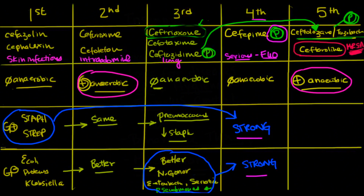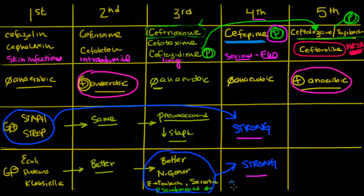One additional important point: sometimes when testing gram-negative bacteria for cefepime, you may notice it is sensitive to cefepime but not to any other cephalosporin. You should think about the possibility of an extended-spectrum beta-lactamase (ESBL). If that is the case, you should not use any cephalosporins whatsoever and should switch to the monobactam — we'll discuss that in a future lecture.